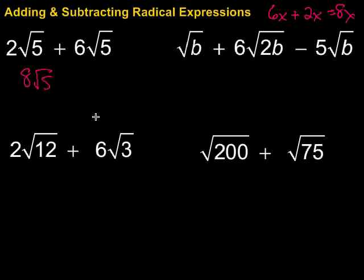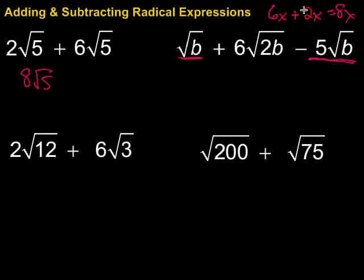Now let's look at this one: the square root of b plus 6 times the square root of 2b minus 5 times the square root of b. The radicand — the thing inside the square root — has to be exactly the same. So I can combine the square root of b and the square root of b, but not the square root of 2b because it's different. That gives us 1 square root of b minus 5 square roots of b, which is negative 4 square roots of b, plus 6 times the square root of 2b, which we just bring along.